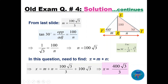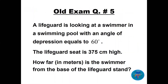We need x, which is m plus n. Adding with LCD of 3: 100 square root of 3 over 3 plus 300 square root of 3 over 3 gives x equals 400 square root of 3 divided by 3.